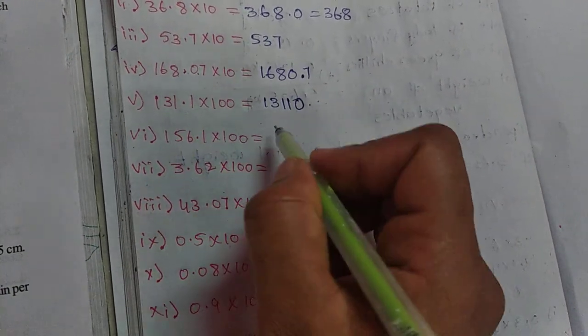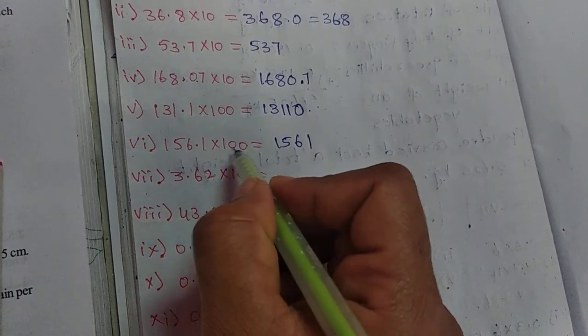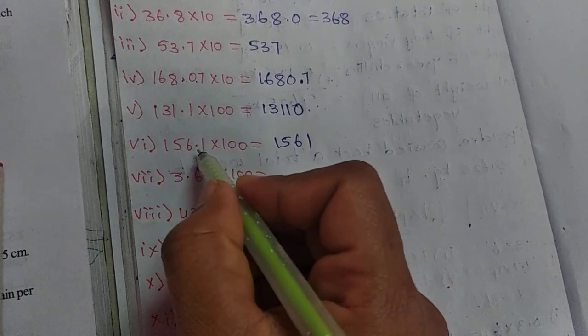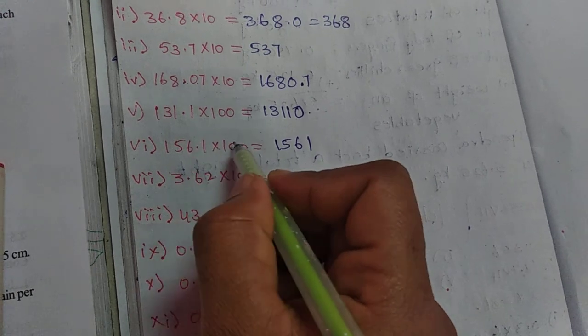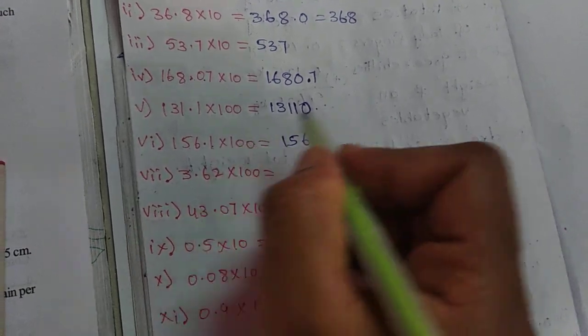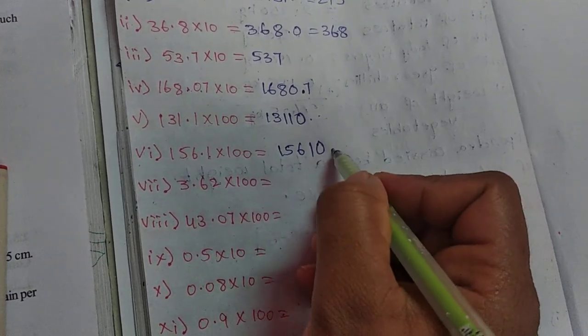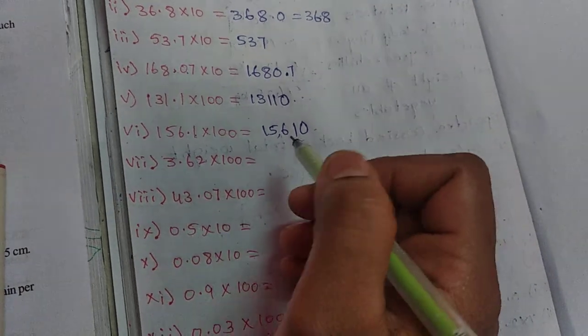Here also we are multiplying with 100. Write that number as it is. Two zeros, we are multiplying with two zeros, so that decimal point moves from the right side two digits. This is one digit, and here no digit is there, so we should write zero. So the point will come here. Total answer is 15,610.